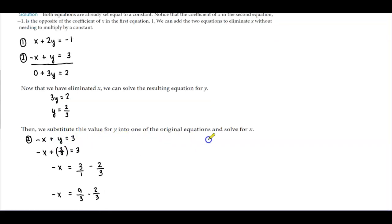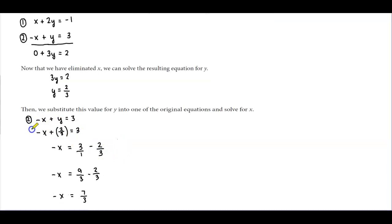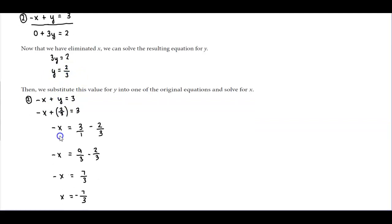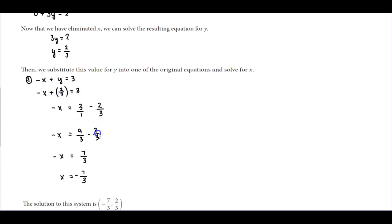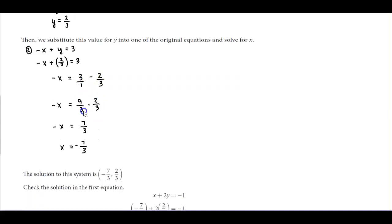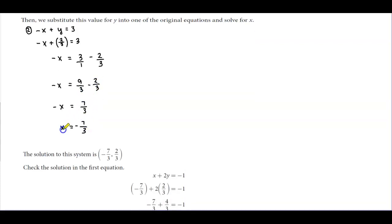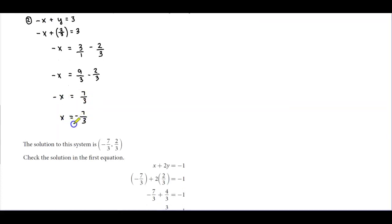The next step is to substitute this value for y into one of the original equations and solve for x. It doesn't matter which original equation you use — you're still going to get the same result. We're going to use equation number 2: negative x plus y equals 3. Substituting y equals 2 thirds, we get negative x plus 2 thirds equals 3. We subtract 2 thirds from both sides, so negative x equals 3 minus 2 thirds. Since 3 equals 9 thirds, we get negative x equals 7 thirds, and dividing both sides by negative 1, x equals negative 7 thirds.